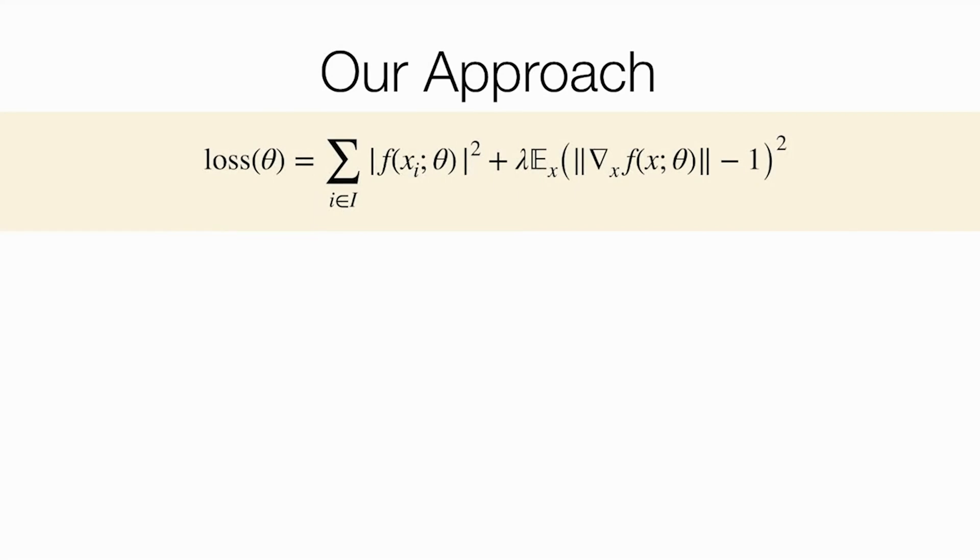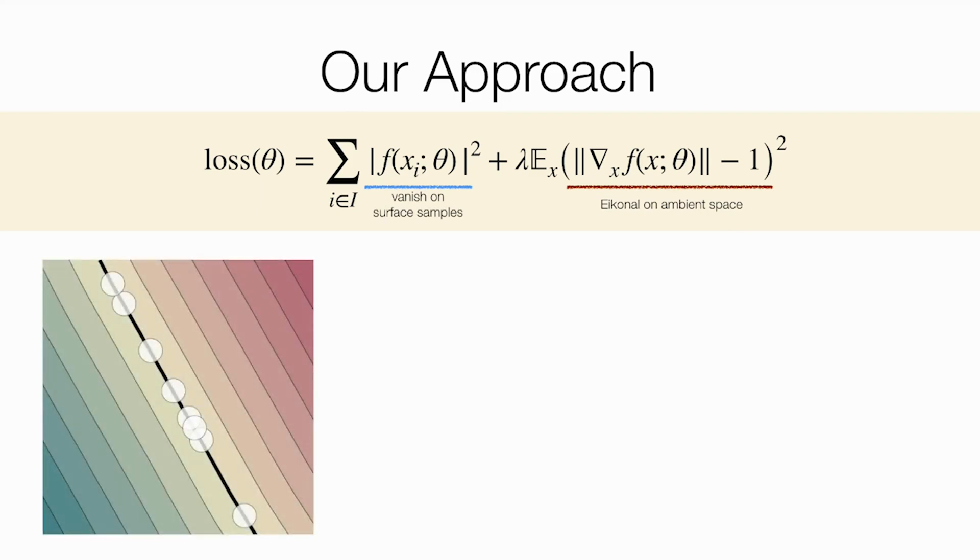We suggest the following simple loss consisting of a term that encourages the network to vanish on surface points, and another term responsible for favoring solutions that satisfy the Eikonal equation. Surprisingly, optimizing this loss favors natural simple solution among the myriad of possible Eikonal solutions.